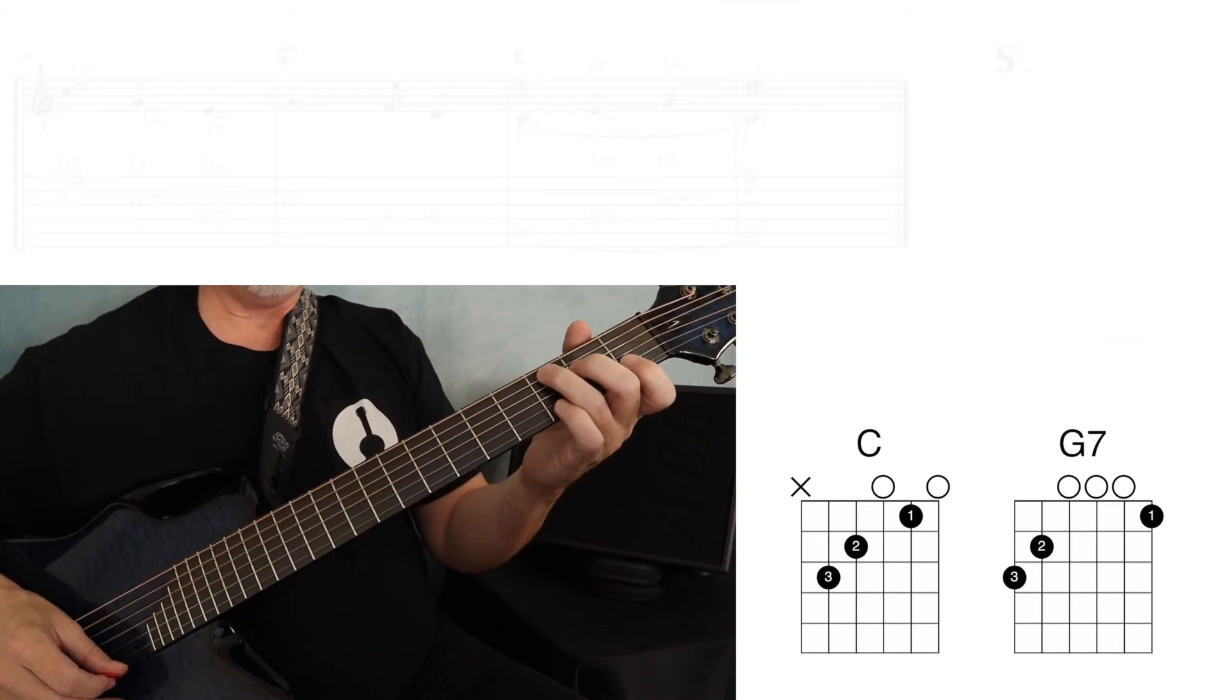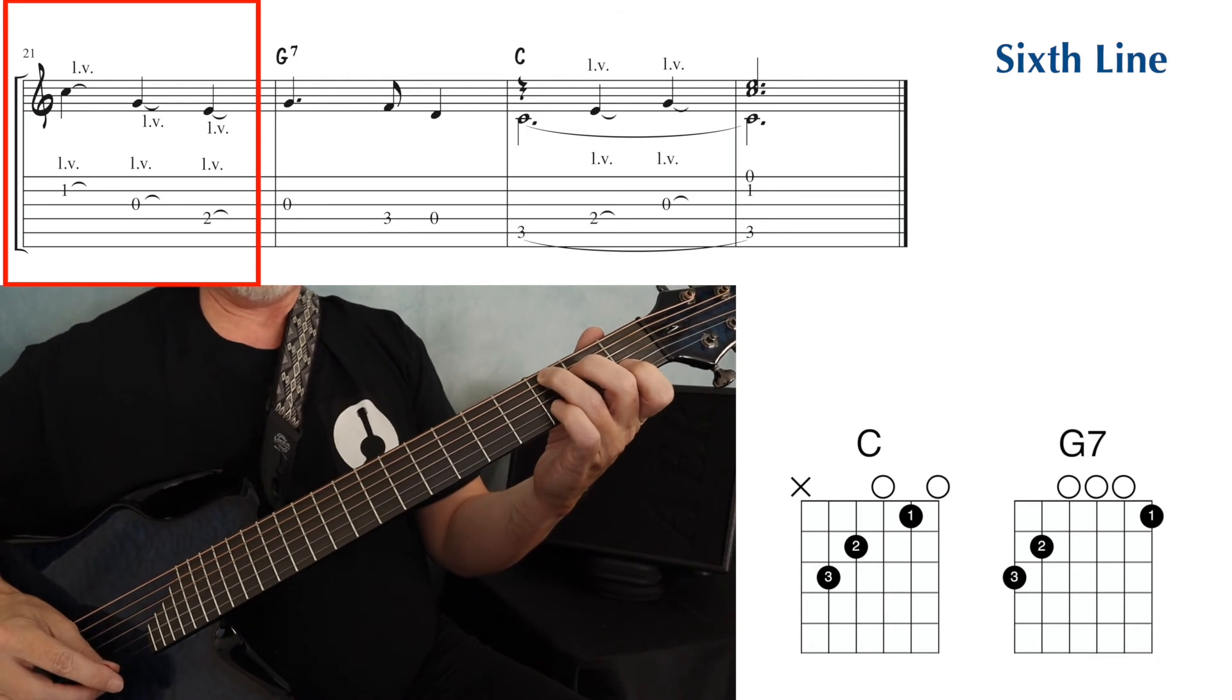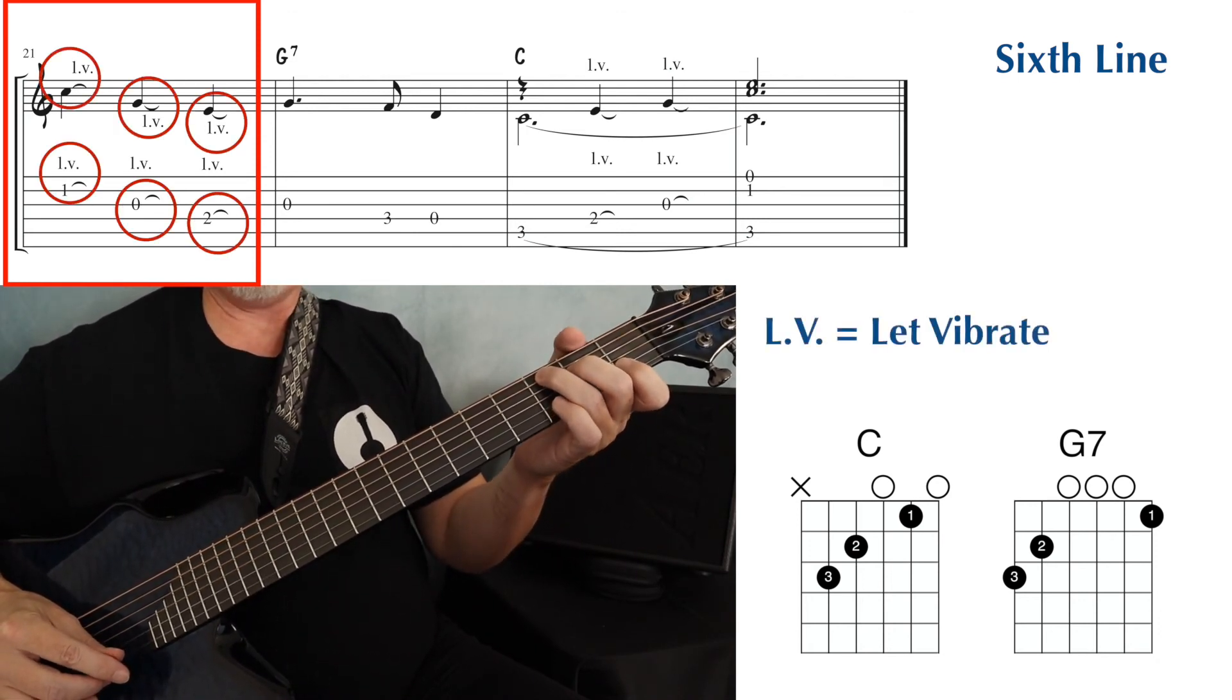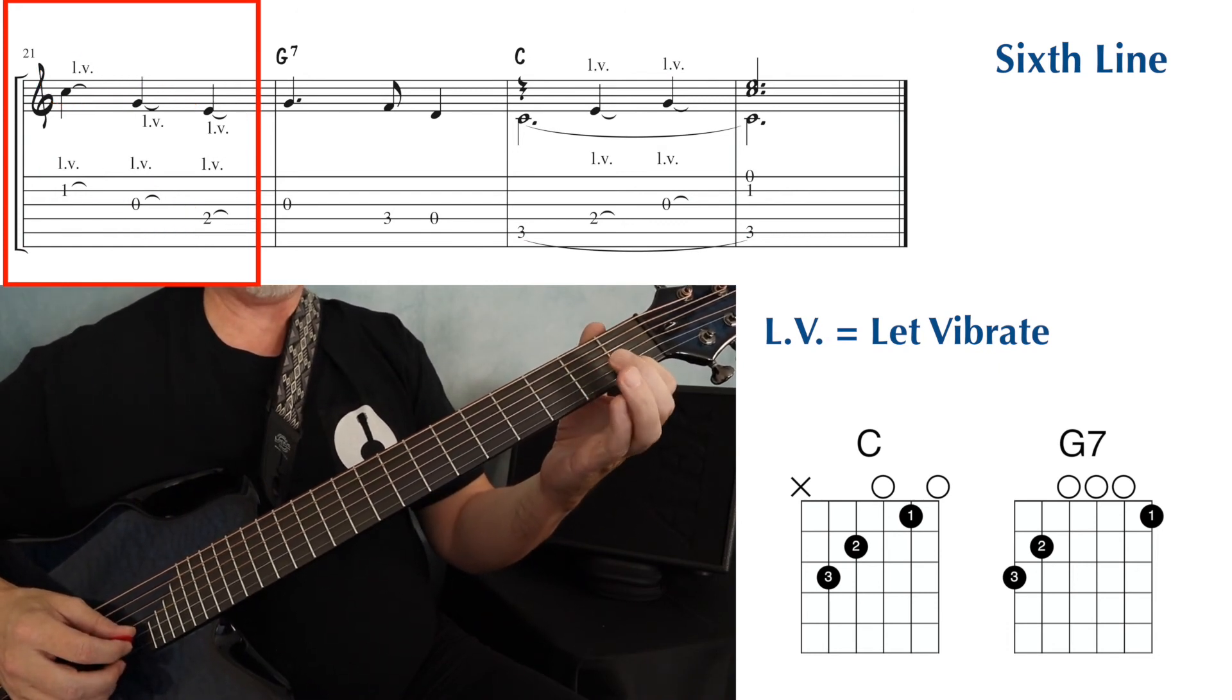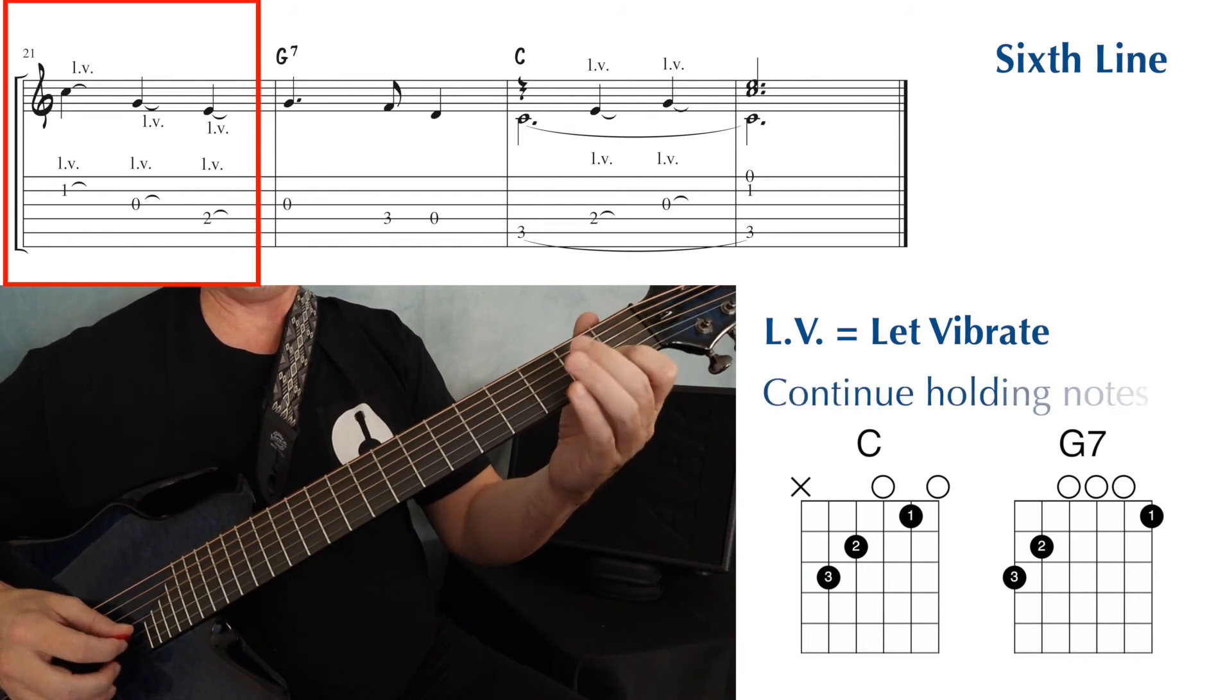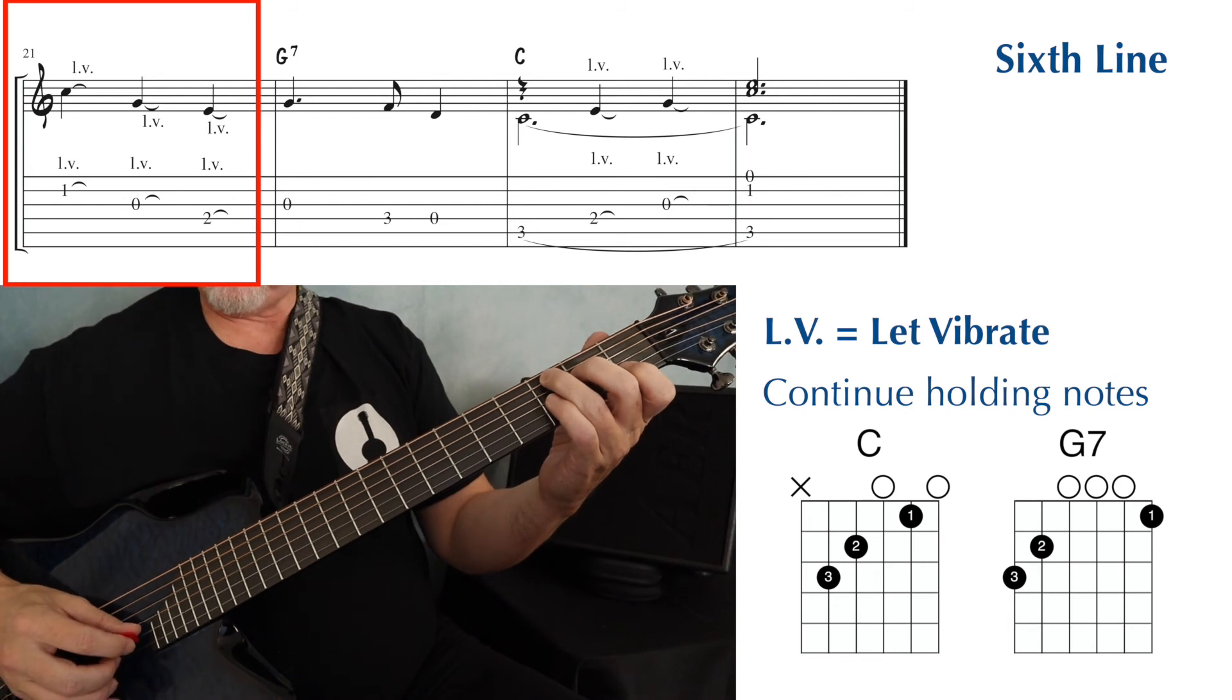The next measure we do have, still a C chord, and we have these markings, L, V, and then those ties, those miniature ties. That just means that you keep those strings ringing. So that first note, that C, first fret, second string, instead of playing the note and then just letting up on it, we hold that note and all the other notes through that entire measure.